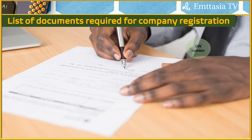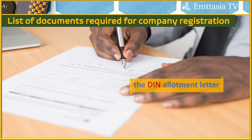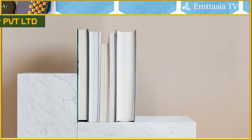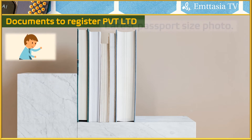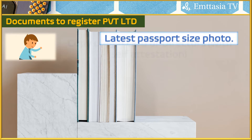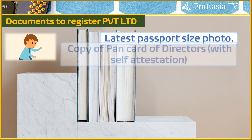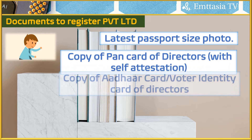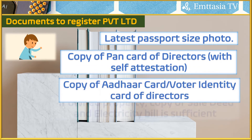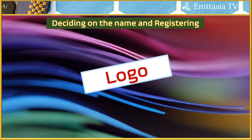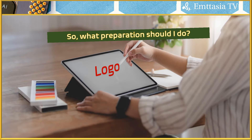Once all applications are complete, the DIN — Director Identification Number — is provided immediately, and the DIN allotment letter is sent to applicants via email. Additionally, you need: latest passport-size photos (keep a few ready), a self-attested copy of your PAN card, a copy of Aadhaar card or voter's identity of the directors, and if you own property, a copy of the sale deed and electricity bill.